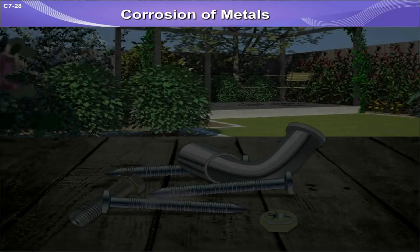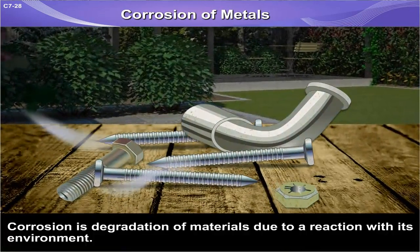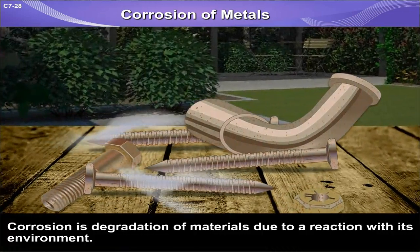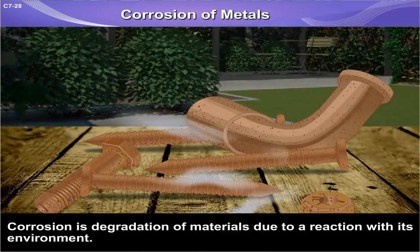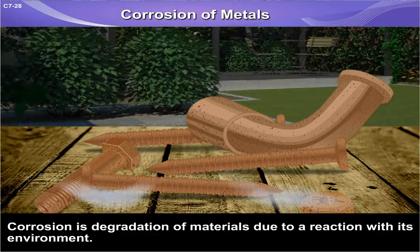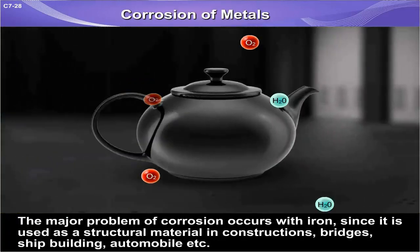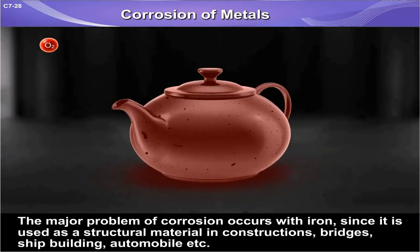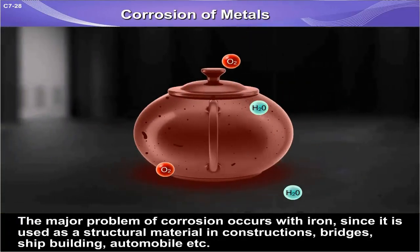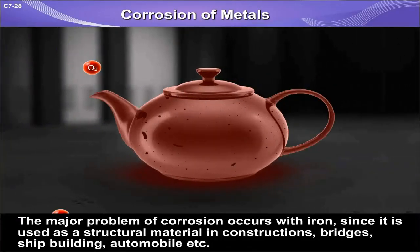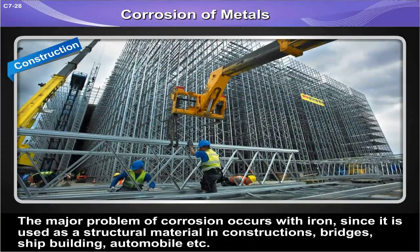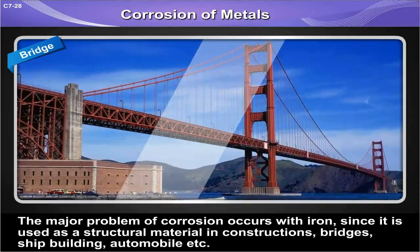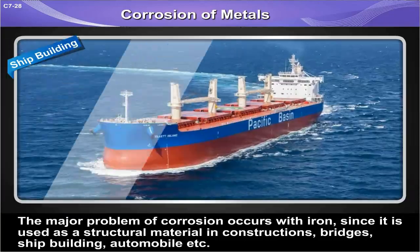Corrosion is the degradation of materials due to a reaction with its environment. The major problem of corrosion occurs with iron, since it is used as a structural material in constructions, bridges, and shipbuilding.